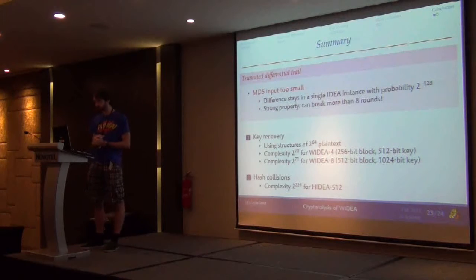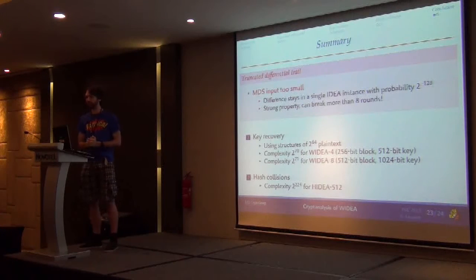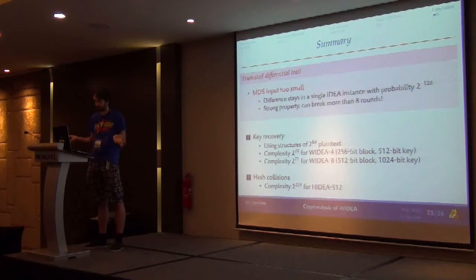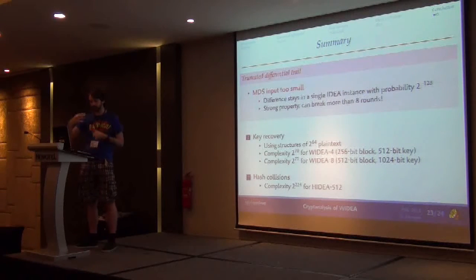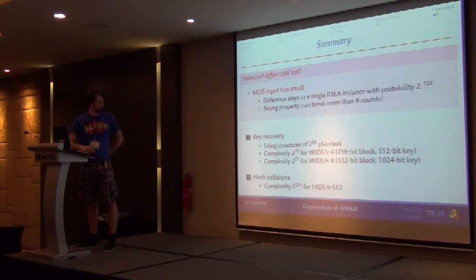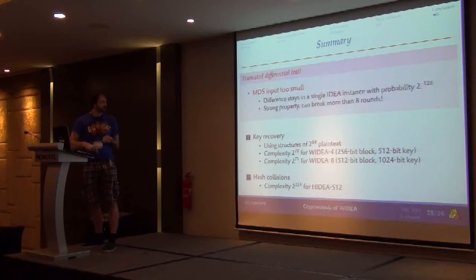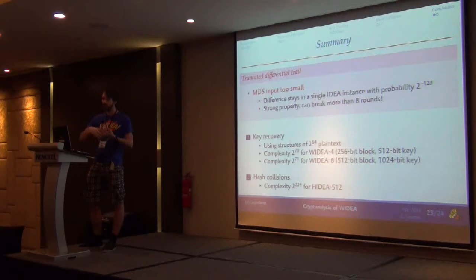To conclude: in this work we looked at truncated differential trails for W-IDEA. We found very efficient truncated trails because the diffusion across instances is via an MDS matrix, and the problem is that the input to the MDS matrix is just too small — only 16 bits — so you can easily zero it out. Thanks to this, we get two attacks: first, a key recovery which costs only 2^{70} or 2^{71} for a block cipher supposed to have security of 2^{512} or even 2^{1024}. Second, hash collisions — we get full collisions in the hash function at cost 2^{24} instead of 2^{256}. Thank you for your attention.